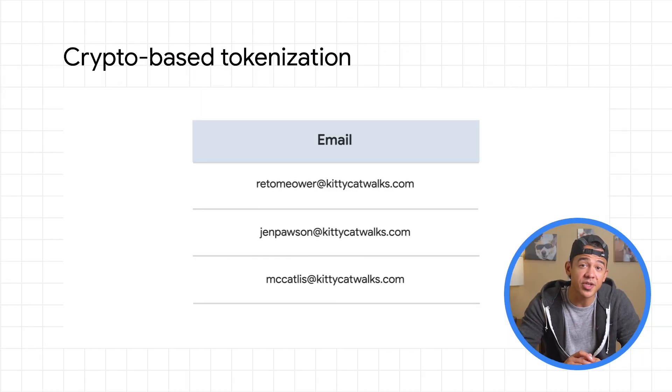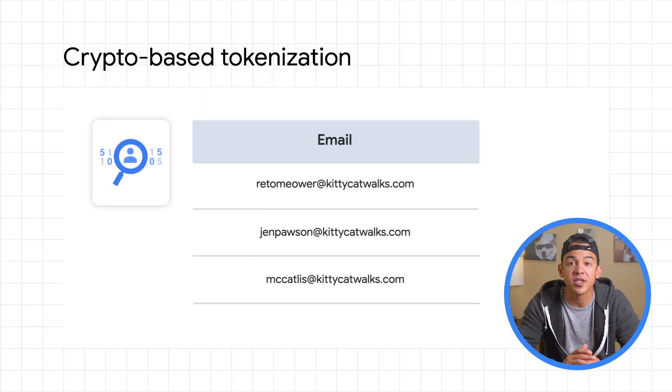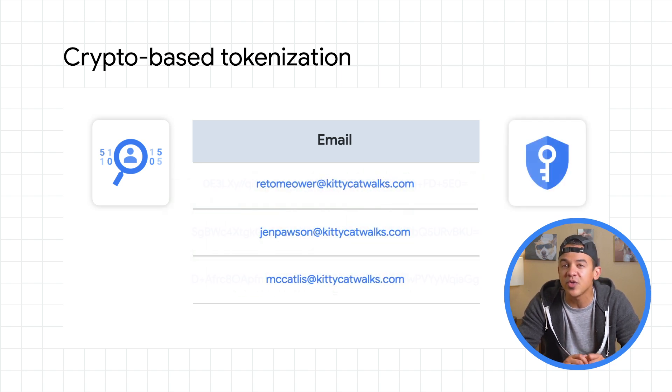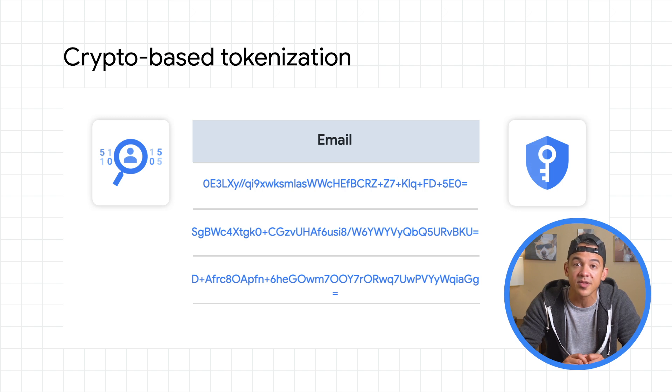Crypto-based tokenization, also referred to as pseudonymization, is a powerful de-identification technique that uses encryption keys to replace sensitive data values with cryptographically generated tokens. This method of de-identification is especially popular in industries like finance and healthcare where protecting data is of utmost importance but preserving data utility is still desired.